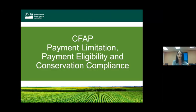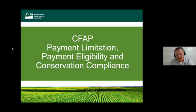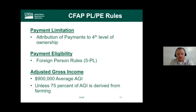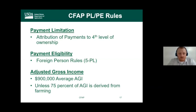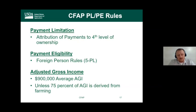I'm Ron Duval, state program director for payment eligibility, payment limitation, and conservation compliance. For CFAP, payments follow down through the fourth level of ownership through attribution, the same as other FSA programs. Payment eligibility foreign person rules apply, and adjusted gross income rules apply — the $900,000 AGI limit unless 75% of AGI is from farming.